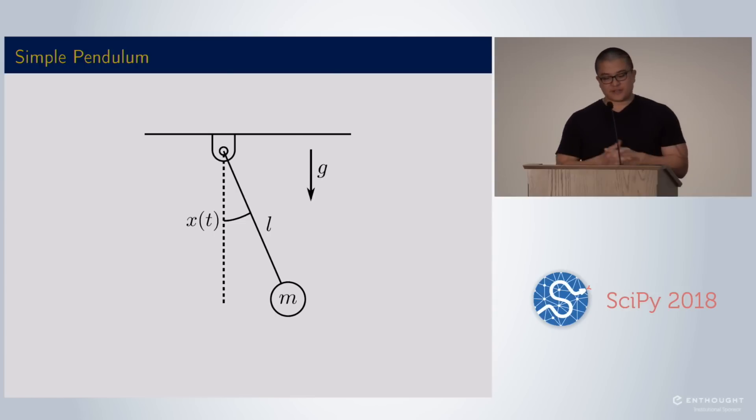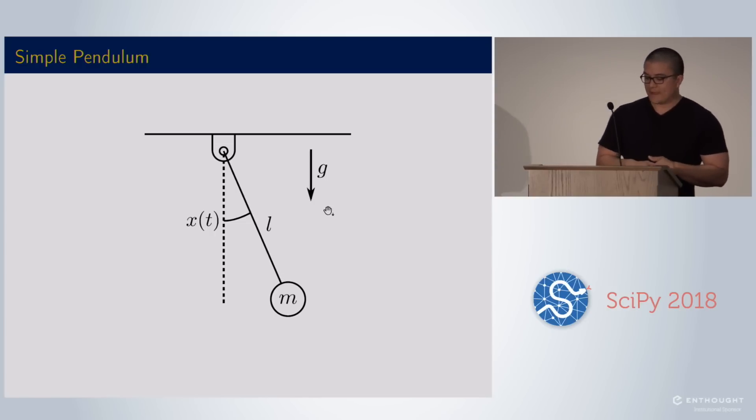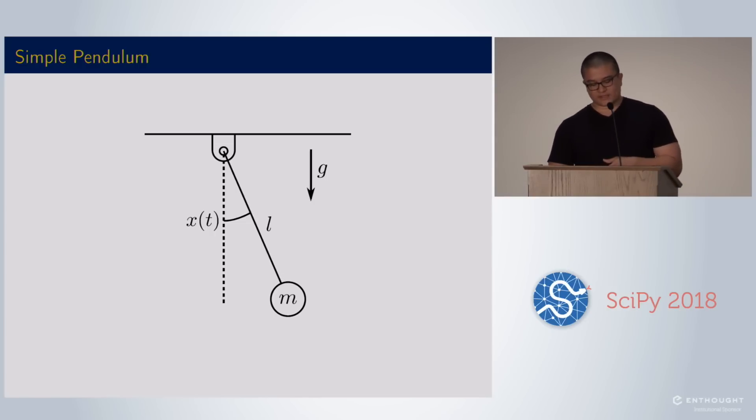To introduce you to SimuPy, I'm going to be working with a simple pendulum hanging down. So this is a free body diagram. I'm using X as the angle, the angular position of the pendulum. It has a length, a mass, and gravity is acting on it. There's a lot of ways to analyze this, but we can go ahead and turn it into a block diagram.